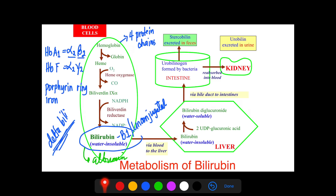Once the water-insoluble bilirubin is bound to albumin, it is carried to the liver. The albumin-bilirubin complex reaches the liver, and bilirubin passes through the liver cells via active transport, meaning it uses energy. After entering the hepatocytes, the bilirubin attaches to soluble transport proteins found in the liver — ligandin and Z proteins.